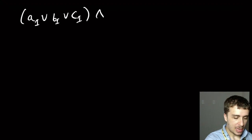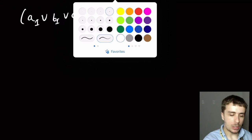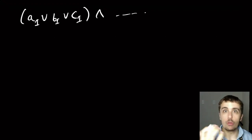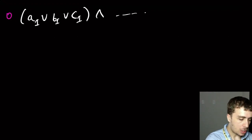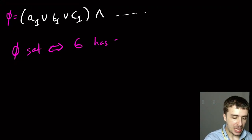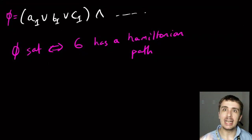A 3SAT formula looks like (a₁ OR b₁ OR c₁) AND other clauses. Each one of those is a clause, and there are m clauses. What we want to do is reduce — in polynomial time in the size of the formula — to a graph G that has a Hamiltonian path if and only if this formula φ is satisfiable.